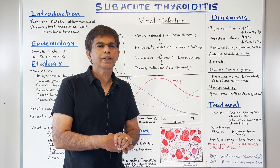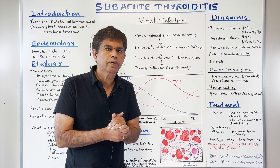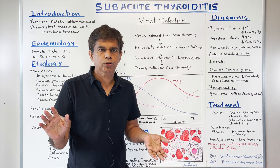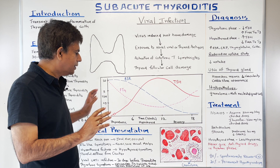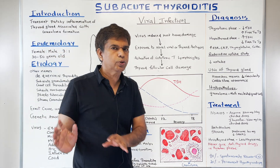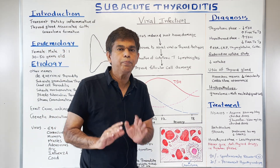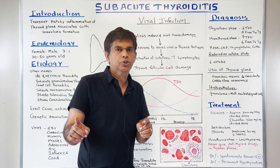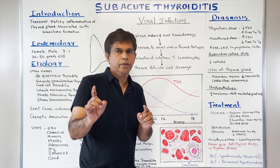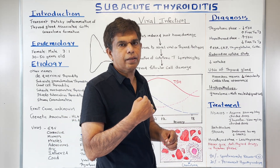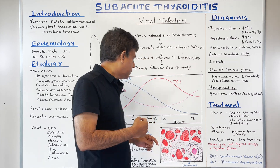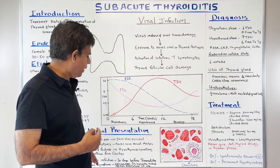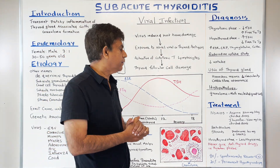Eventually, about 80% of people recover, but 20% go into permanent hypothyroidism. So there is a mixture of hyperthyroid and hypothyroid features, but the main focus is on the thyrotoxicosis and hyperthyroid picture initially. Anterior neck pain radiates to the jaw and ear, along with nervousness, tachycardia, sweating, tremors, and palpitations.